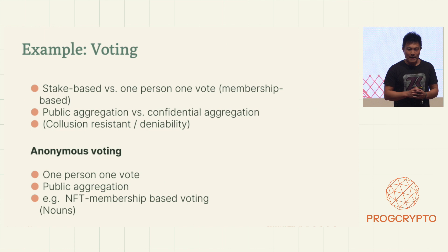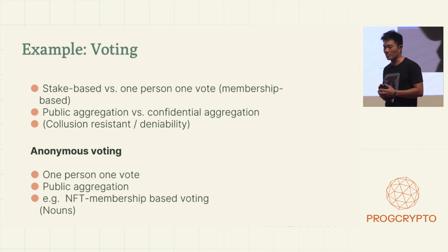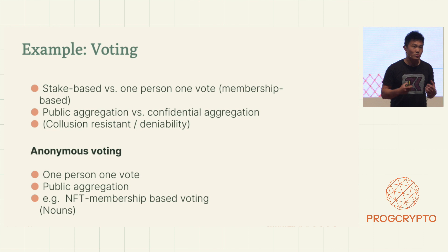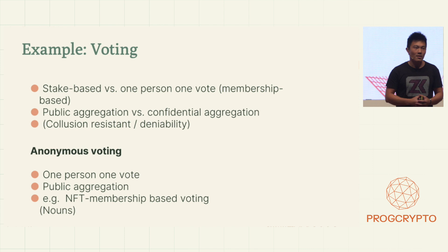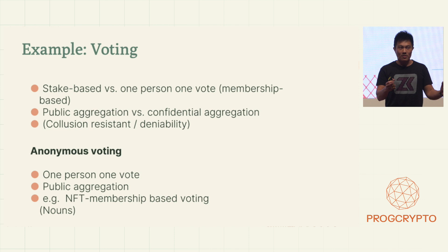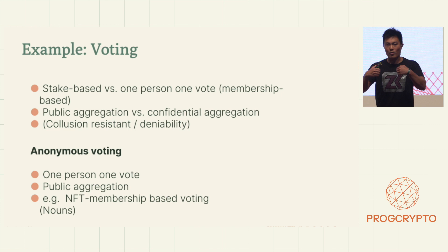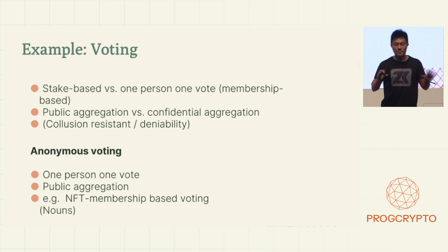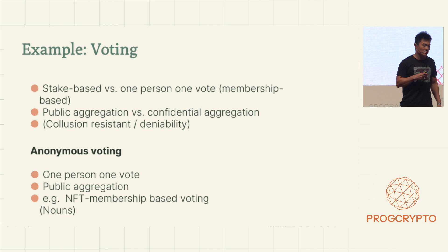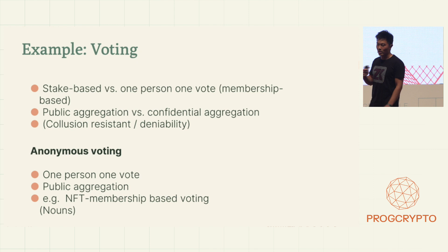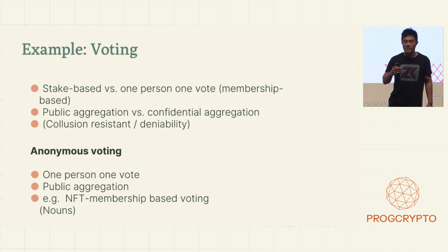Let's start with voting as an example. Broadly speaking, there are two types of voting applications. One where your voting power depends on the stake you have in the system — token-based voting is a great example. On the other hand, you have systems where one person gets one vote, so every voter's voting power is fungible. These differ also by public versus private aggregation, and a third property is collusion resistance or deniability — solutions like the MACI project from PSE help achieve this.